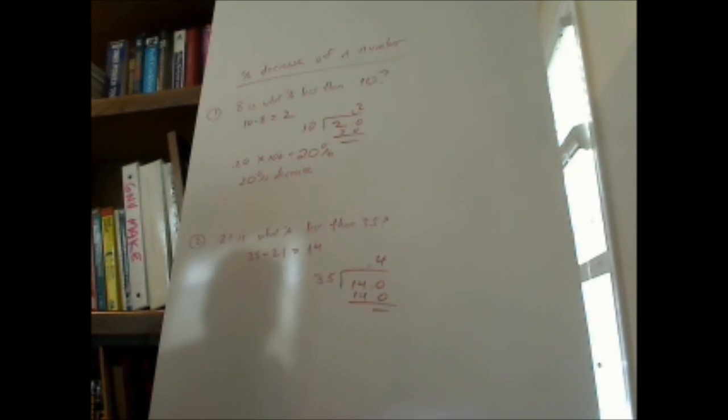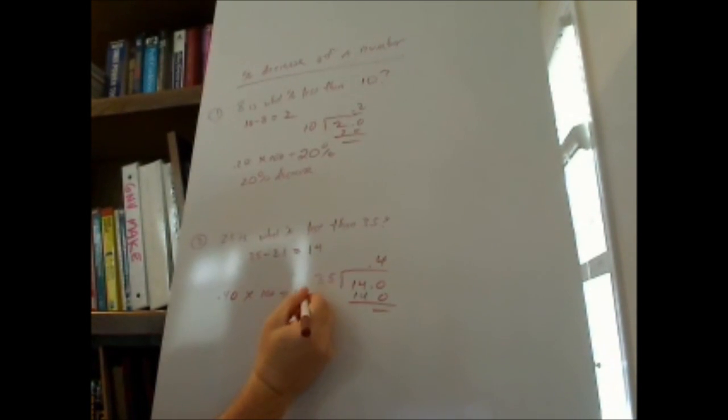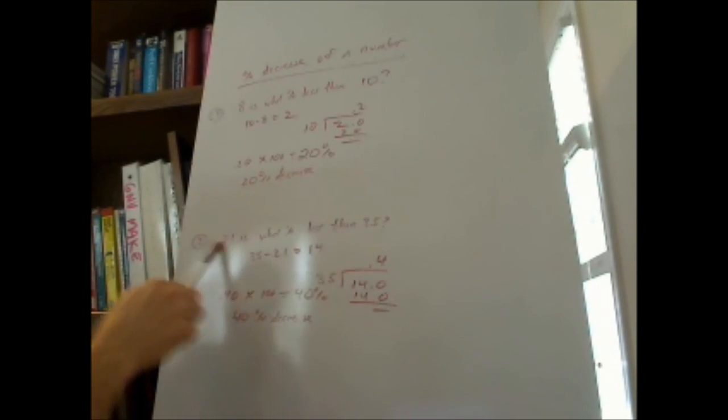0.4. What does 0.4 mean? It means 4 tenths. To get a percentage, you've got to do 0.40 times 100 equals 40%. So, we have a 40% decrease from 35 to get to 21.